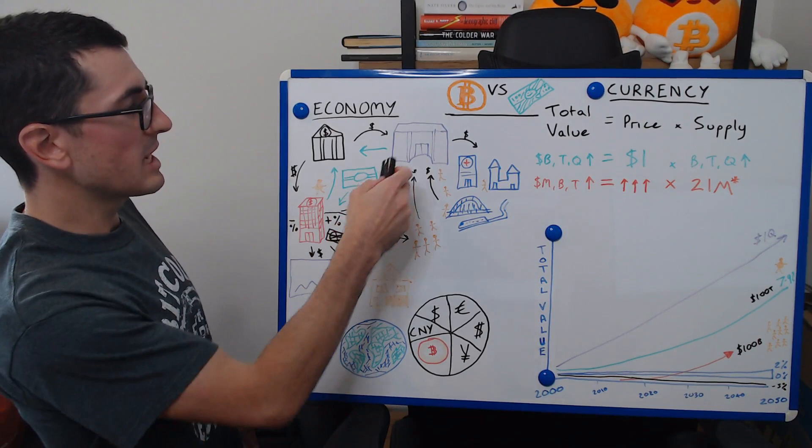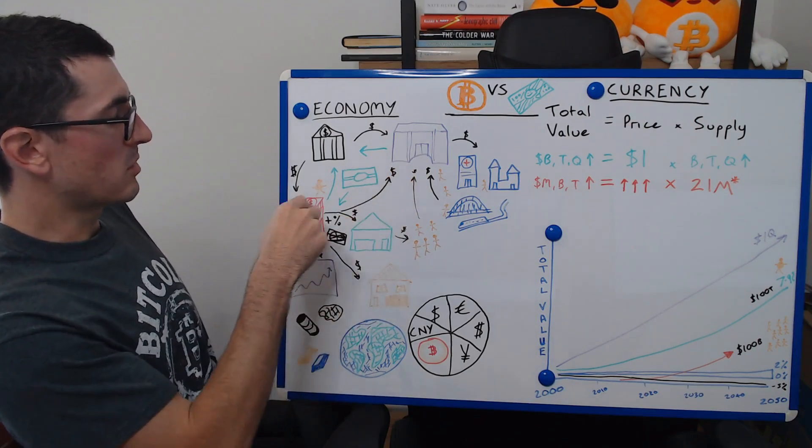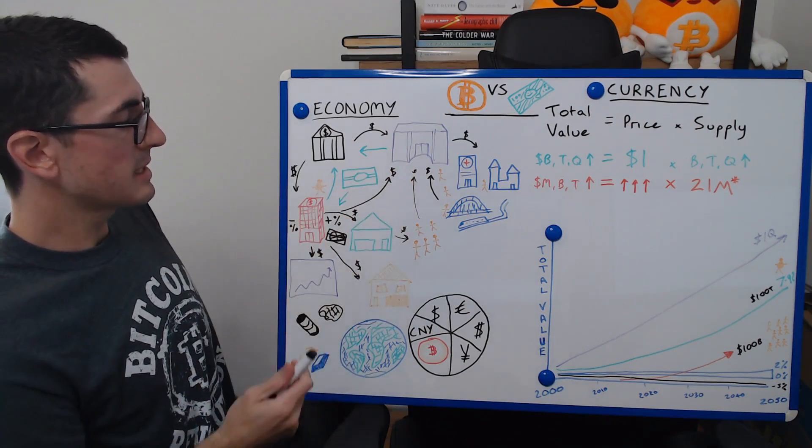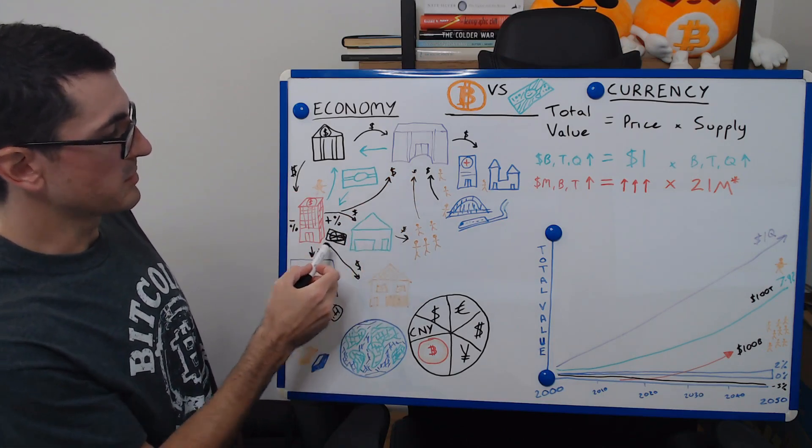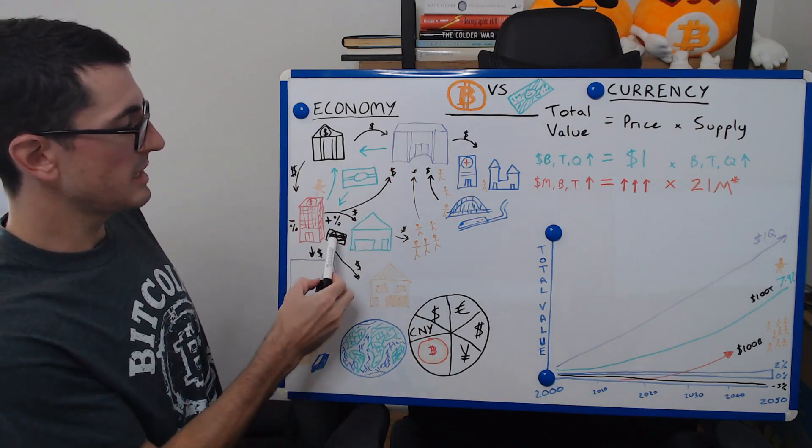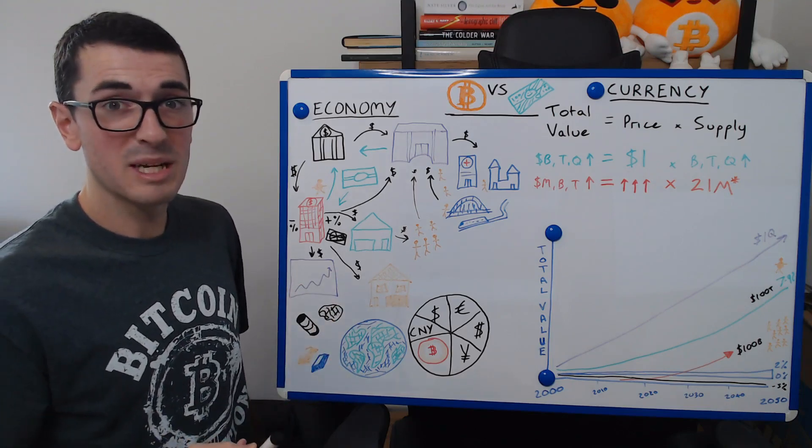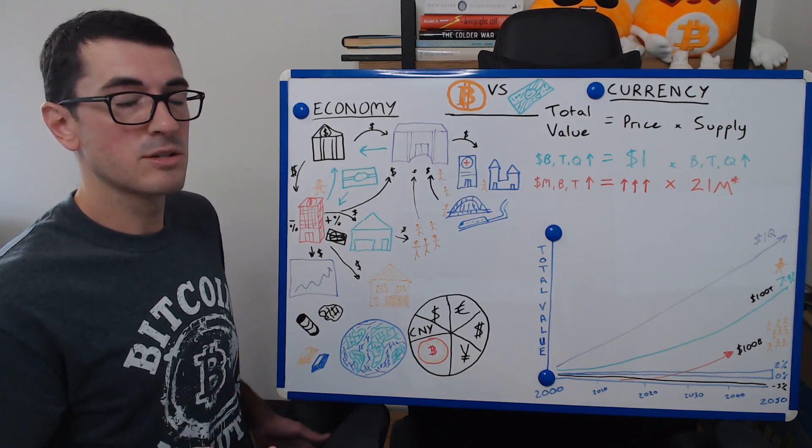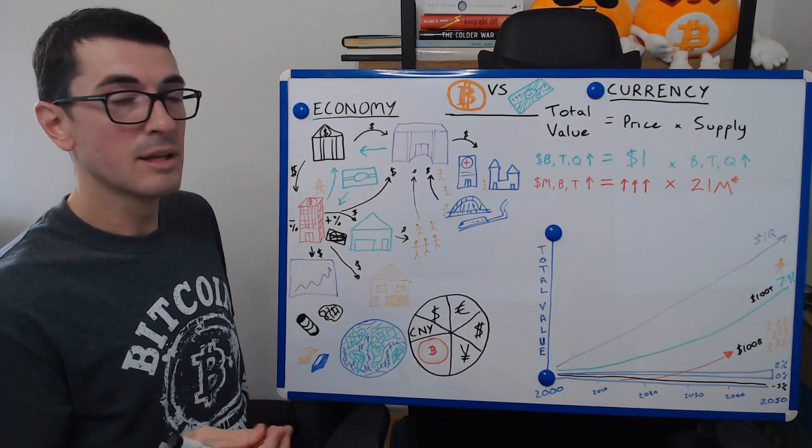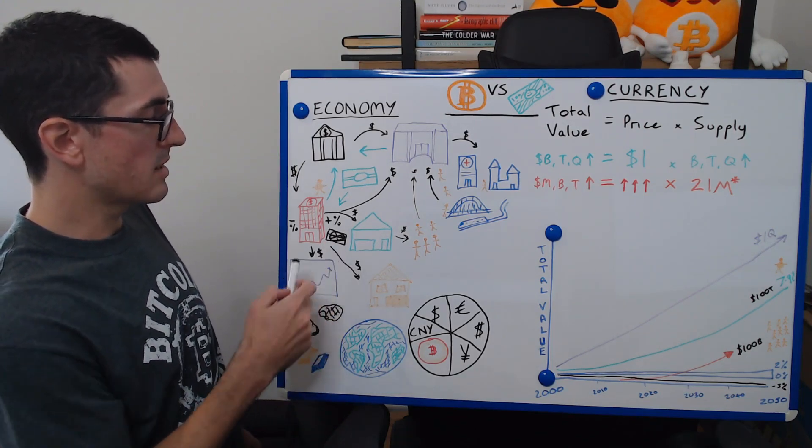Now, where this gets really interesting is where does this money actually flow? Does it get into the real economy when we talk about things like QE, which is meant to be stimulating the economy?